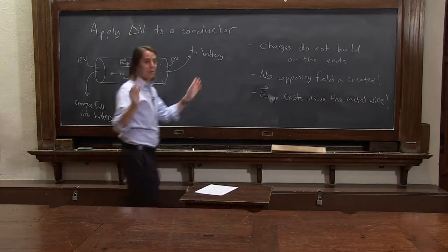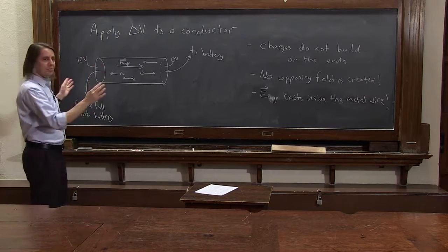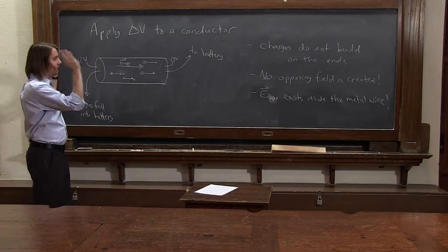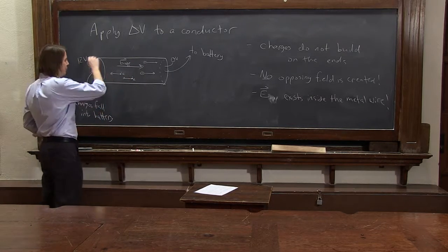Completely the opposite of what we learned about before. Before, we said if you put this in just a uniform electric field, charges will move and the E field will go to zero. Now we're saying that doesn't happen, because the charges can't build up and create an opposing electric field. You'll still have a potential drop.